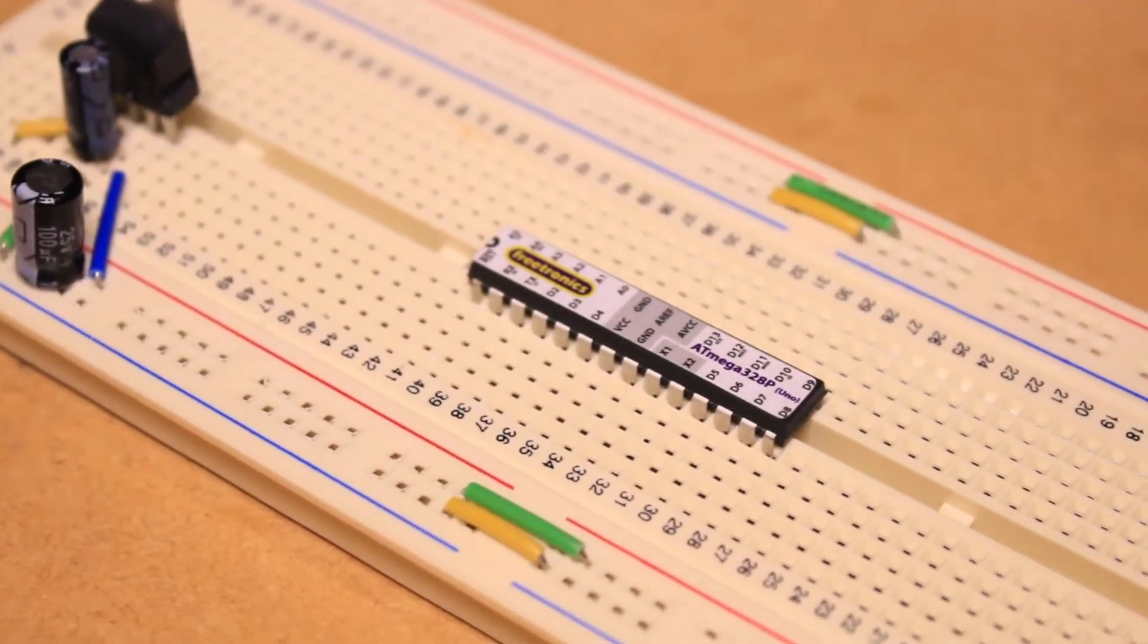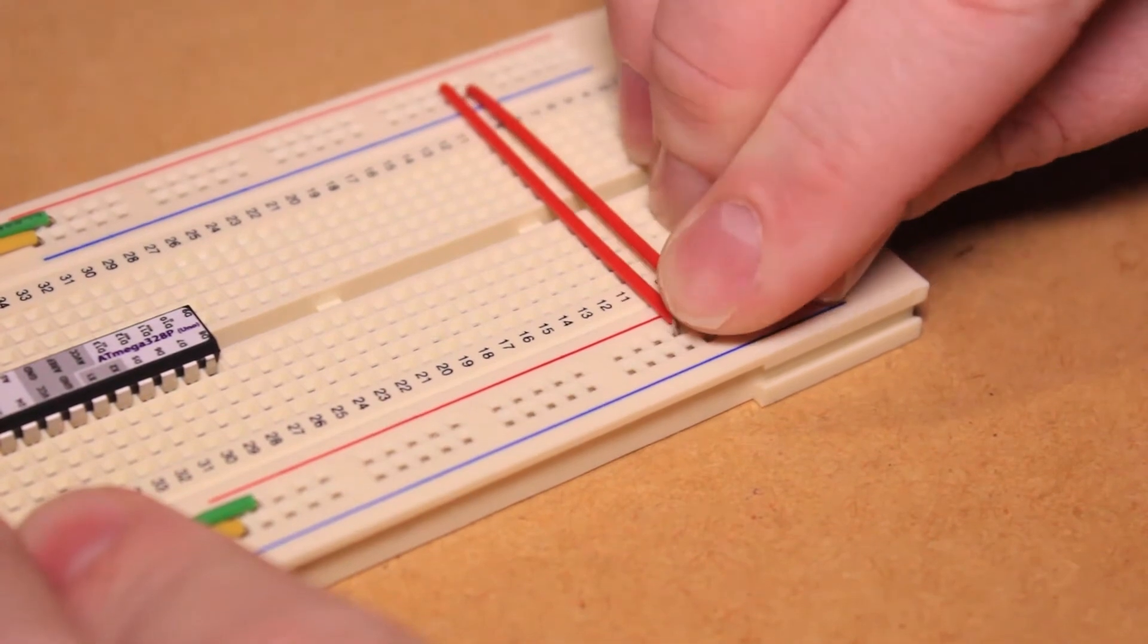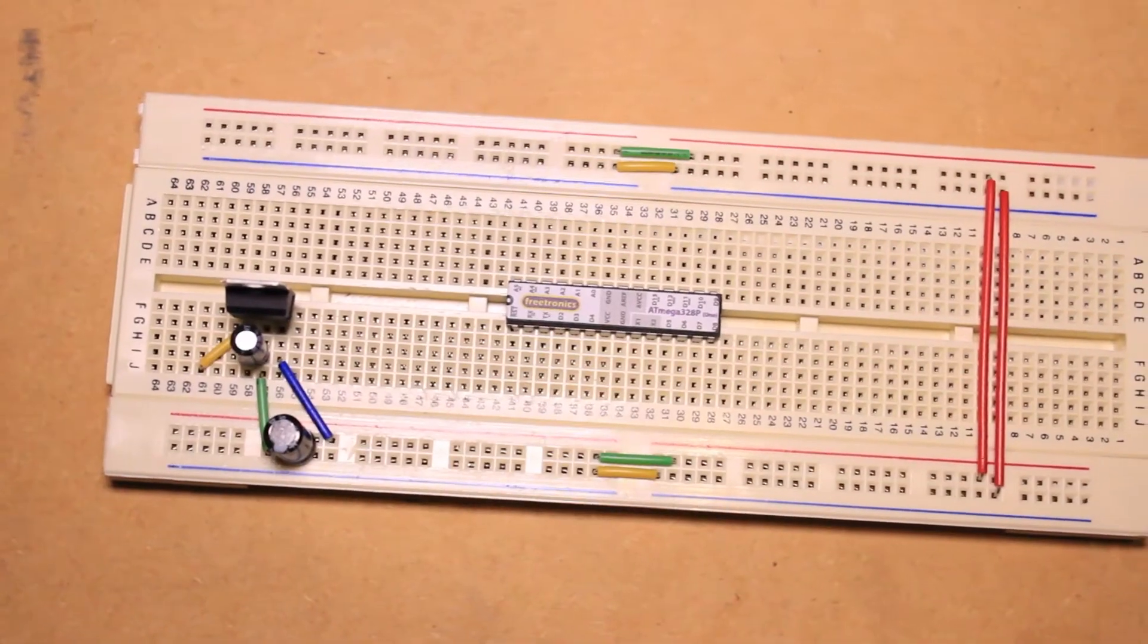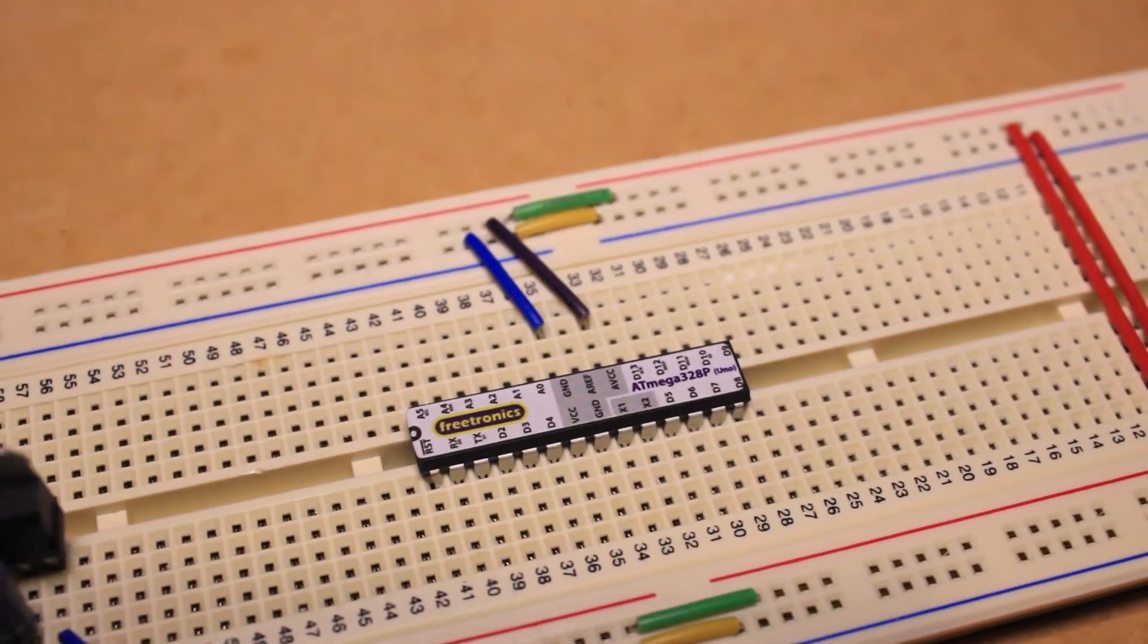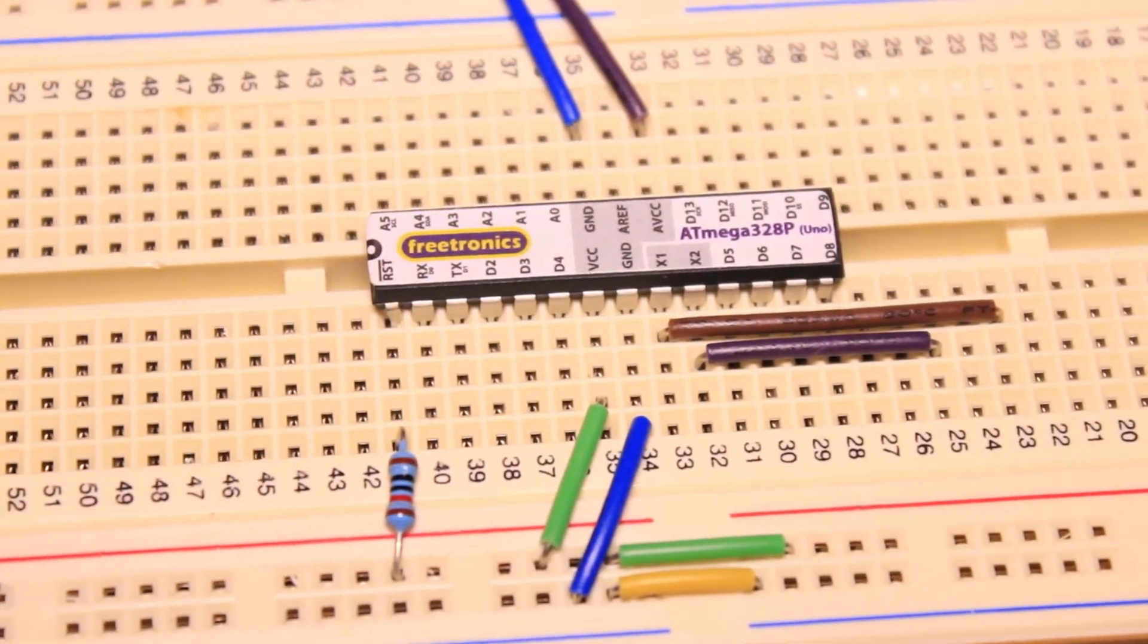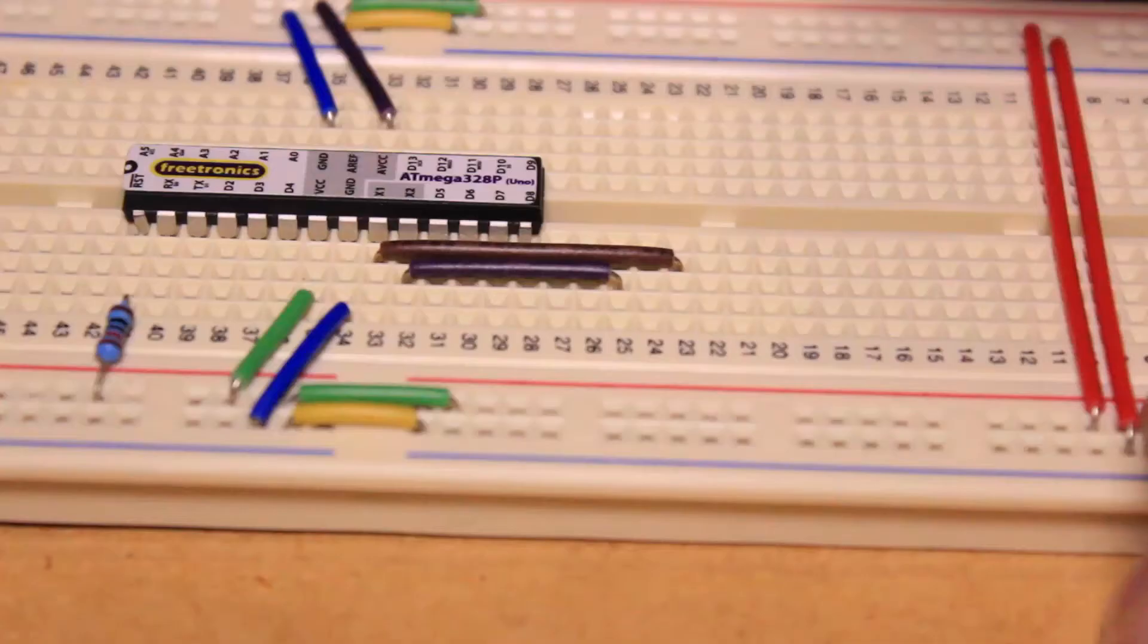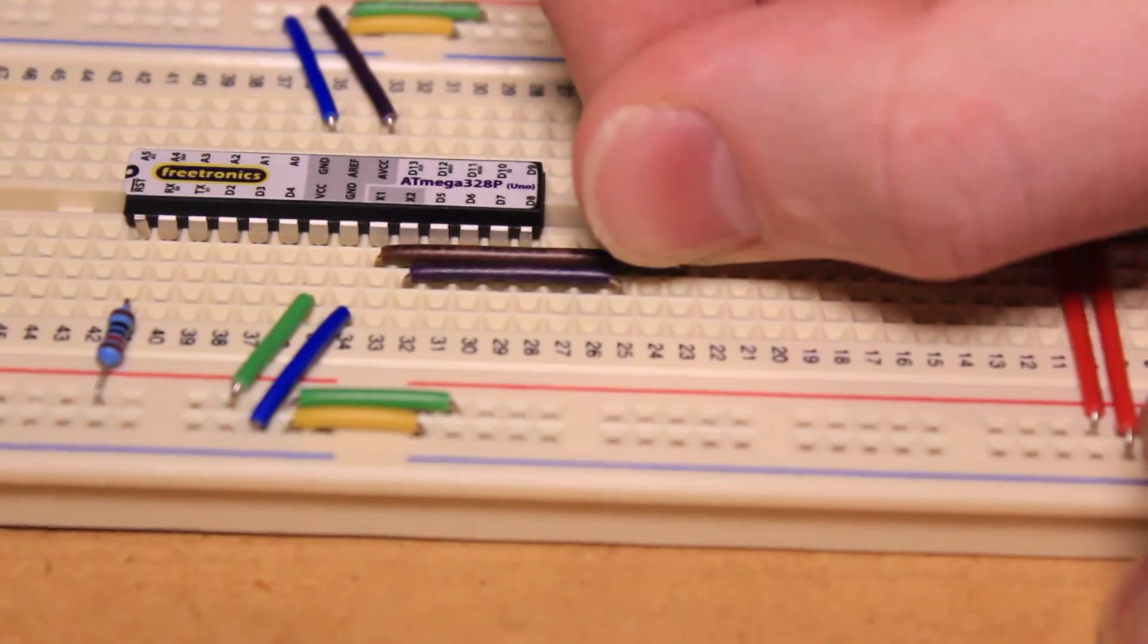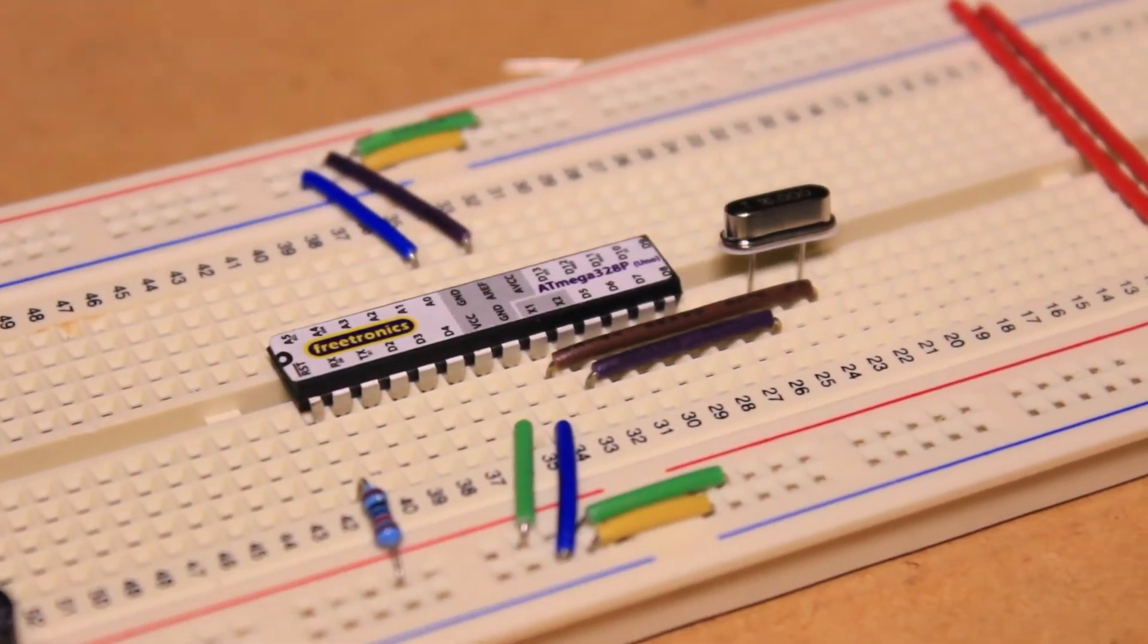I then connected both sets of power rails together and inserted the resistor into the breadboard, followed by the 16MHz crystal, six header pins, and the 0.1µF capacitor.